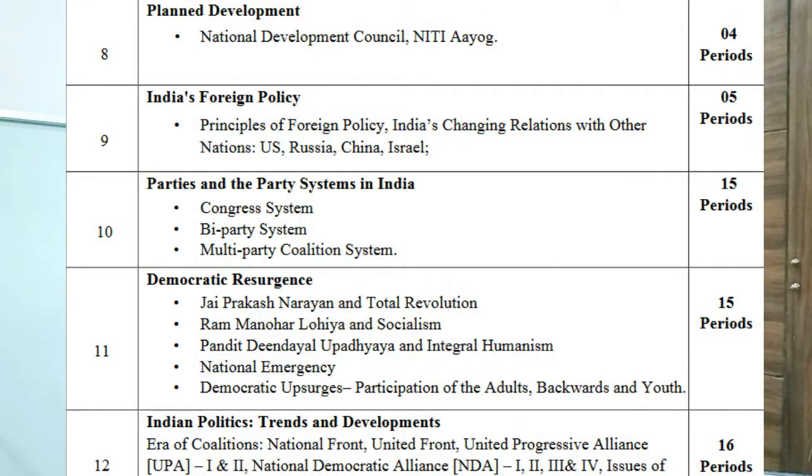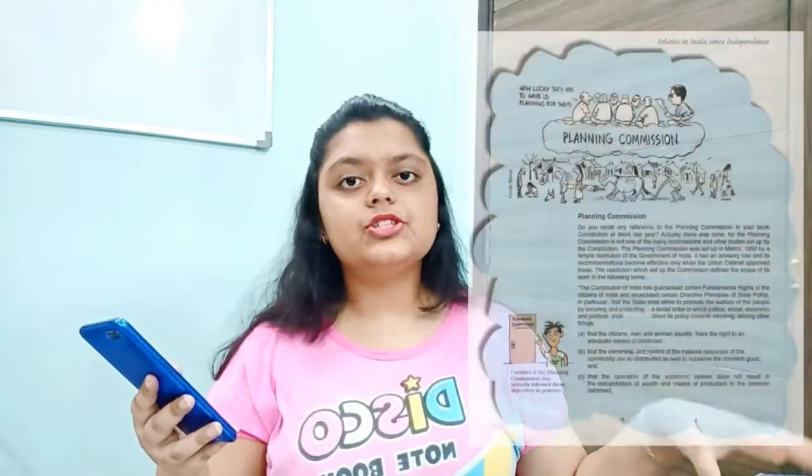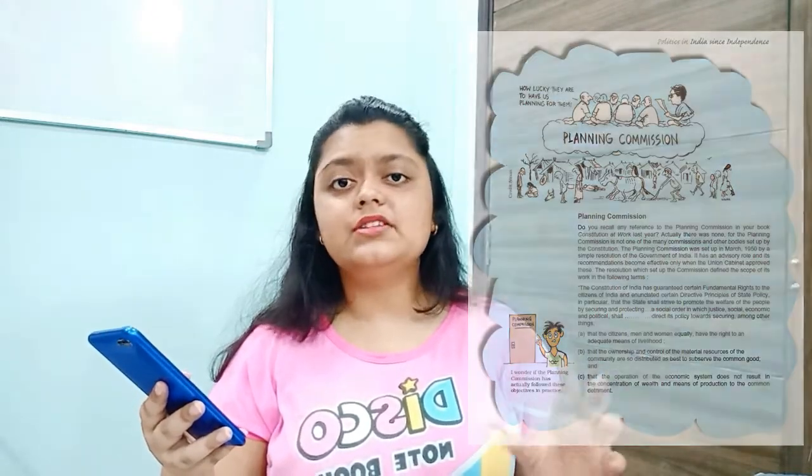Chapter 2 is Era of One Party Dominance. Chapter 5 is Challenges to and Restoration of the Congress System — these have been merged together. In Politics of Planned Development, there are two new things in the proposed content: Neeti Aayog and the NDC National Development Council. These two topics are not written in your old book. So we have to study Neeti Aayog and National Development Council — both are new editions. Your old book had Planning Commission, First Five Year Plan, Second Five Year Plan, Third Five Year Plan, and Green Revolution — all of these were in Chapter 3, but now there are changes and only Neeti Aayog and NDC are the two new editions. The old topics appear to be deleted.